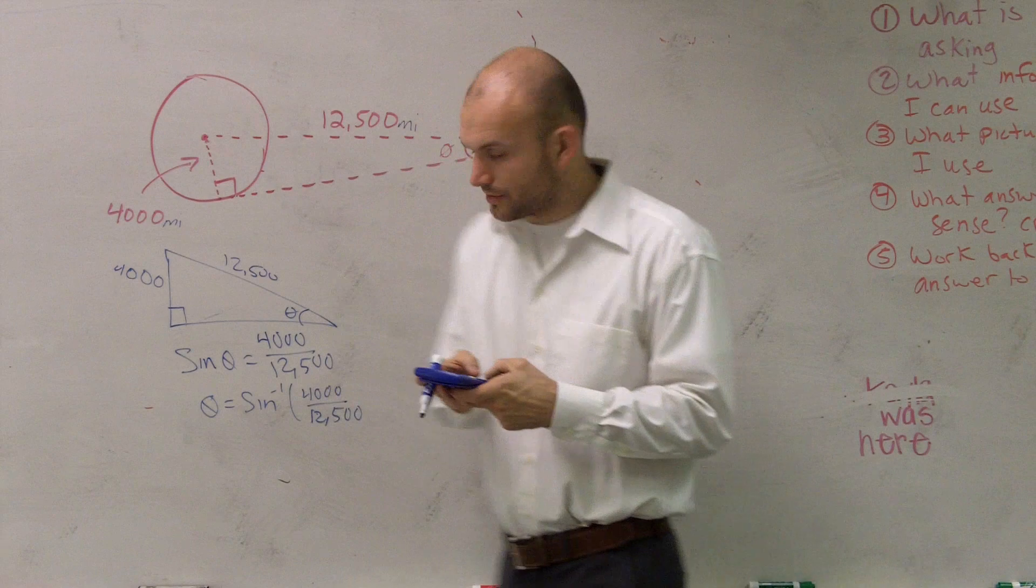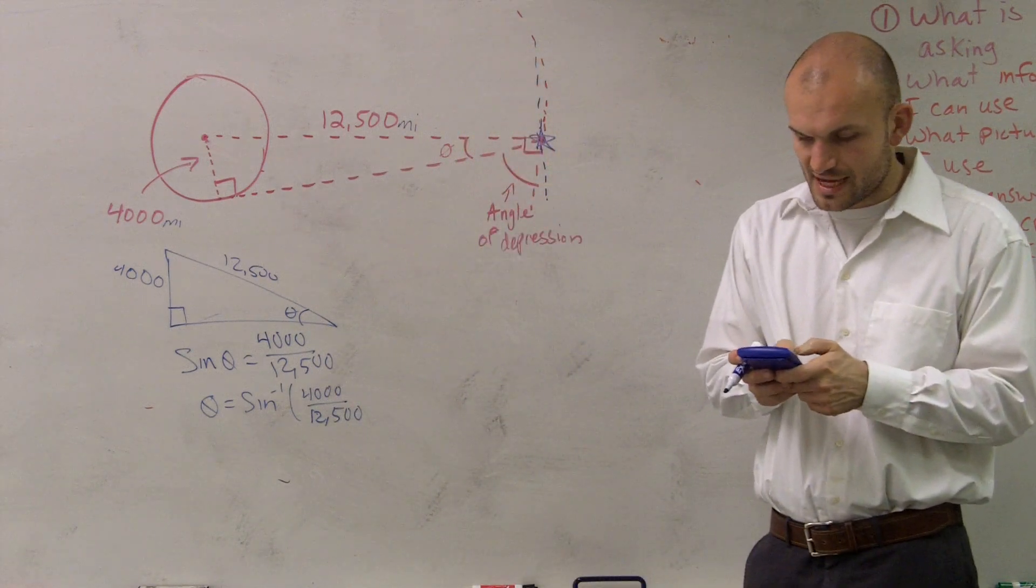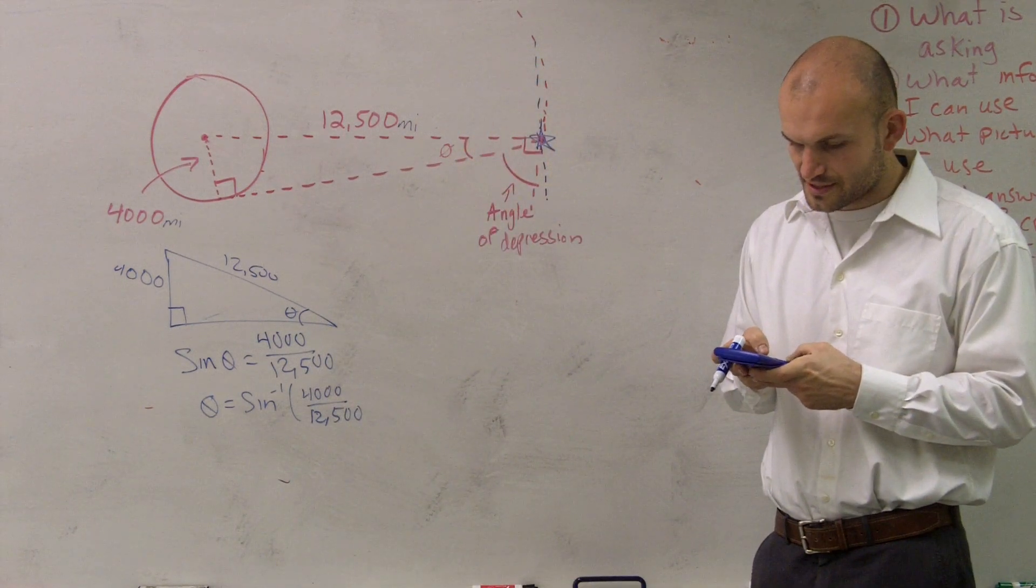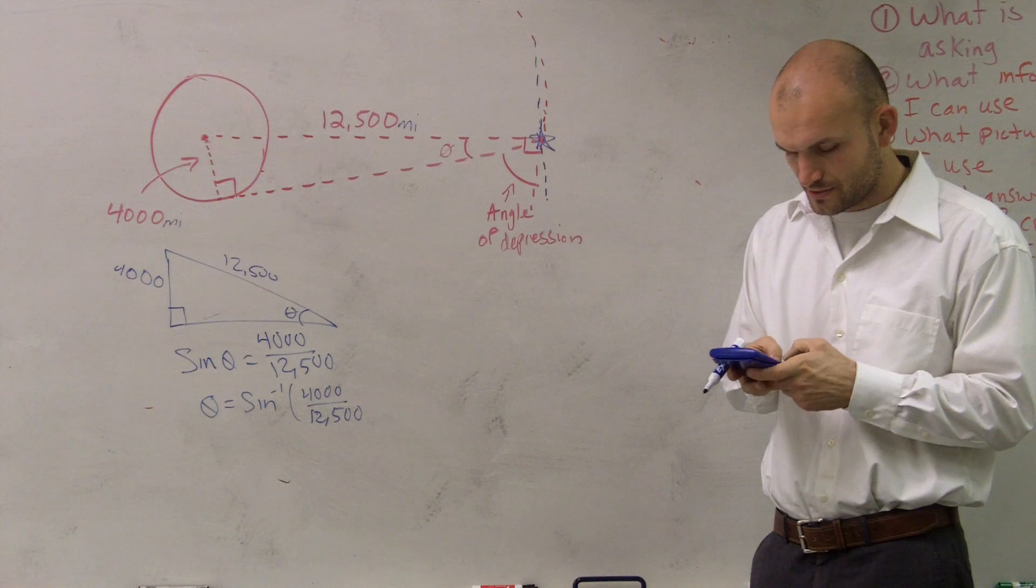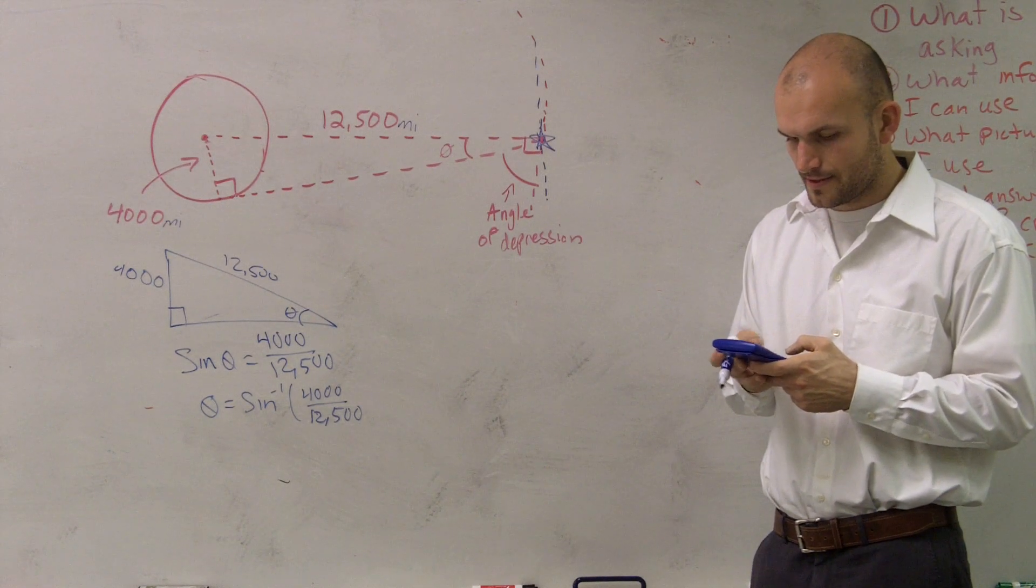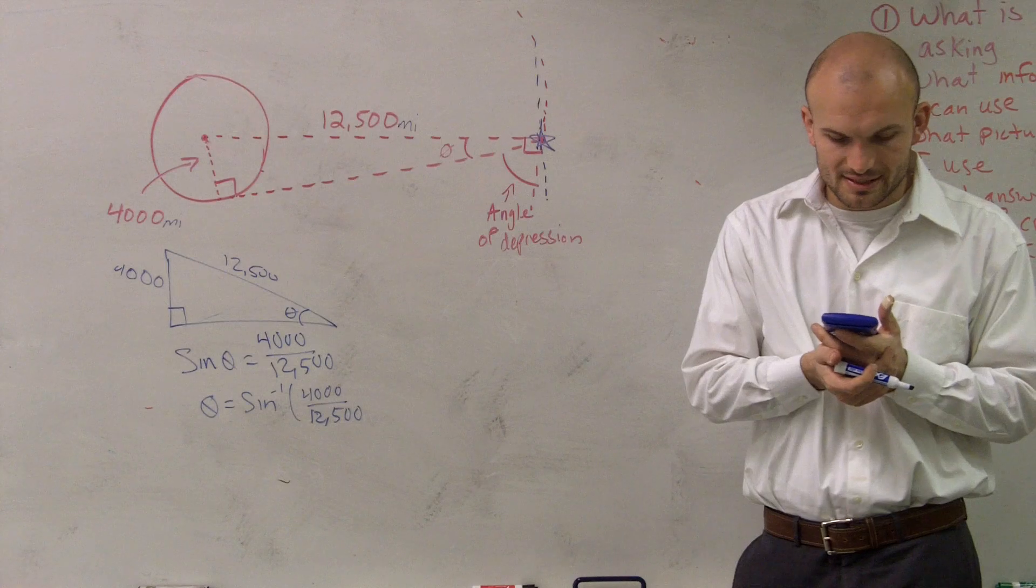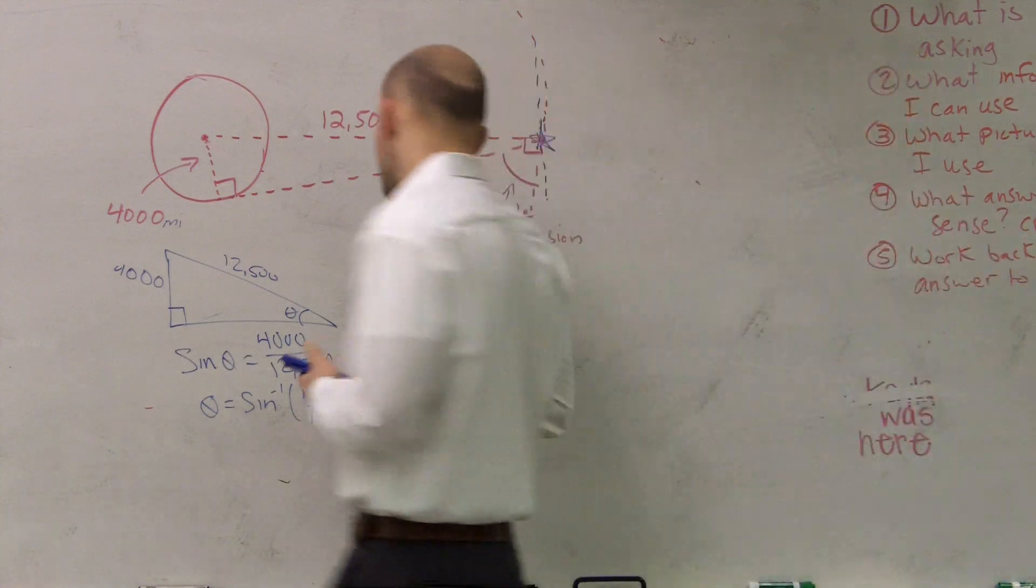So therefore, what I'll do is I'll type in my calculator inverse sine of 4,000 divided by 12,500, and I get 18.66 degrees. I'll just round it right there.